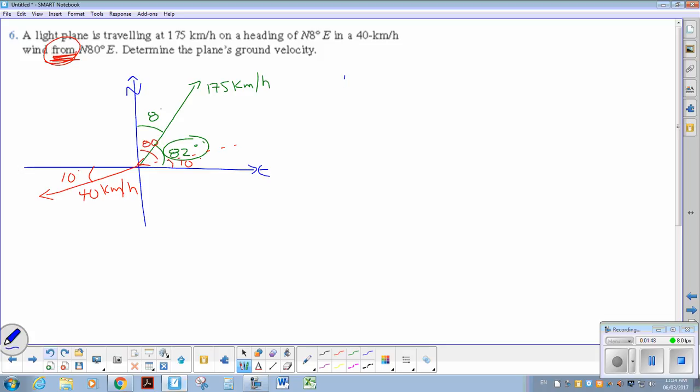So algebraically, my plane is heading 175 cos 82i plus 175 sin 82j. My wind vector, I'm going to add those vectors together.